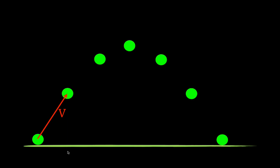This object is doing two things at the same time, and those two things are really independent of each other. The two things it's doing are moving in the x direction and in the y direction at the same time, but those two motions are independent of each other. We're going to go through the differences between the motion in the x and the motion in the y direction.